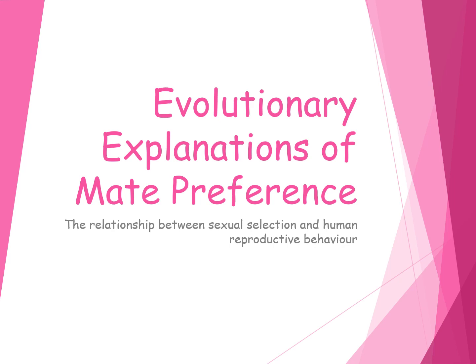This is the evolutionary explanation of why we end up with our partners and find certain people attractive. You need to be aware of the relationship between sexual selection and human reproductive behaviour — how sexual selection has led to differences between male and female reproductive behaviour and their preferences in who they end up mating with.